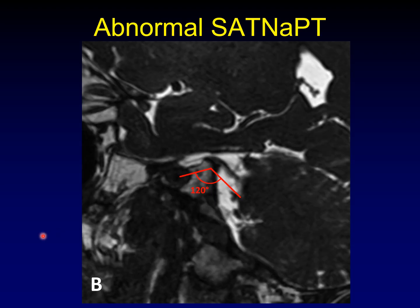Here's what an abnormal sagittal angle of the trigeminal nerve at the porous trigeminus looks like. Here is the cisternal segment of the trigeminal nerve, here is the porous trigeminus, and this is the most superior rootlet within Meckel's cave — you can see it's a much more acute angle. Two standard deviations from normal is about 150 degrees, and three standard deviations from normal is 135 degrees. Once you get more acute than 135 degrees, like this patient with 120 degrees, you are very likely to fail microvascular decompression.